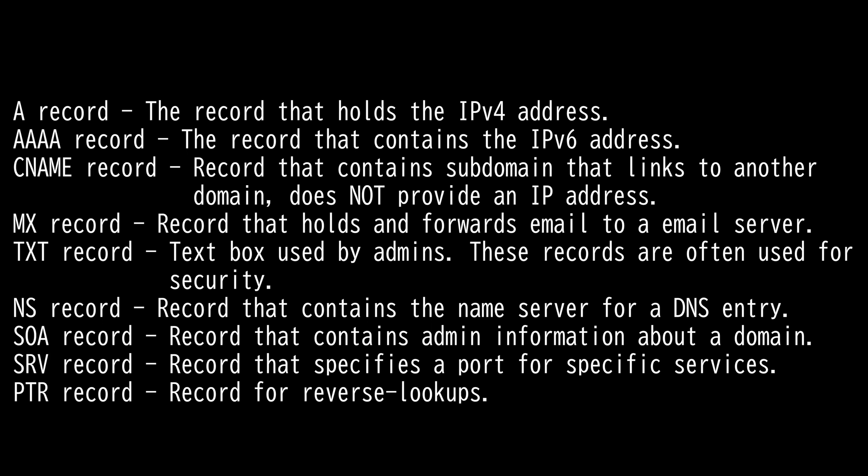Then we have the Service record, which specifies a host and port for specific services such as VoIP or instant messaging. Most other DNS records only specify a server or IP address, but Service records include a port at the IP address as well. Some internet protocols require the use of Service records in order to function. Lastly, we have the Pointer record — PTR for short. Think of this as the reverse version of A or Quad A records. A PTR record provides a domain name associated with an IP address — not the other way around — basically a reverse lookup.